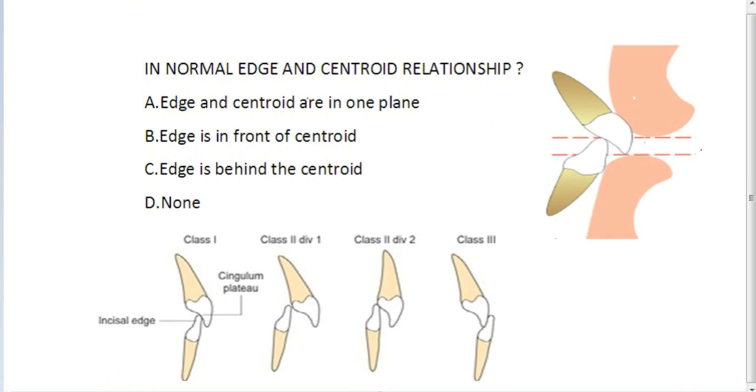Before answering this MCQ, you should know what is an edge and what is a centroid. It's very simple. Edge is the tip of your lower central incisor. And centroid is the midpoint of the root of your upper central incisor.